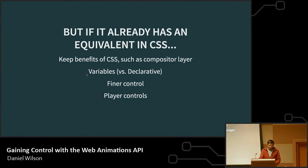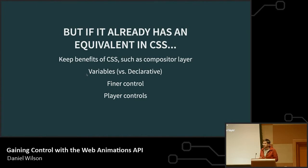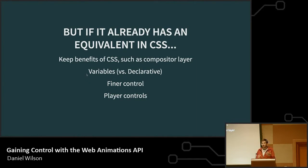You might be wondering: if we've already got one way to do it, why are we even talking about this? CSS is great and has been doing a lot of cool things. But JavaScript didn't have an efficient, native way to do animation where the browser takes on all the calculations. Now it does. We get the benefits of CSS — like that compositor layer — but we also get what JavaScript does best: access to variables, it's not just declarative, you can get finer control, really manipulate the timing, and those player controls I alluded to earlier.